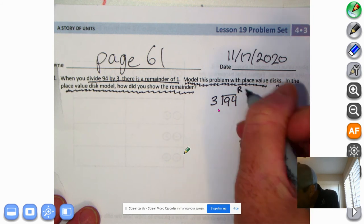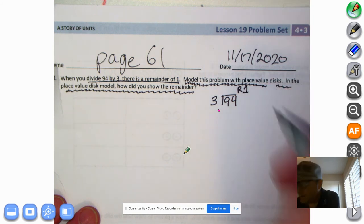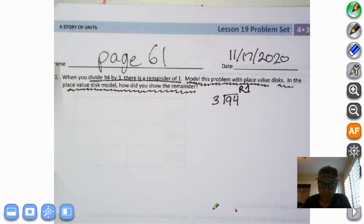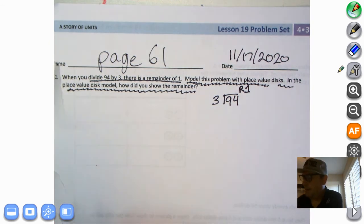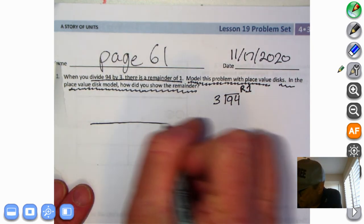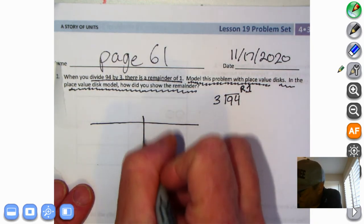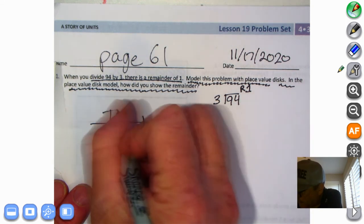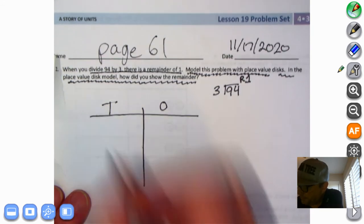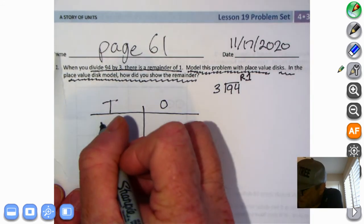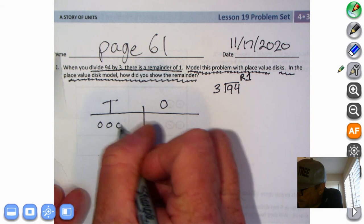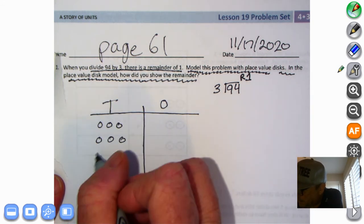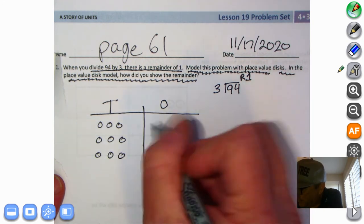Let's get busy with our place value disk. We have our ones and our tens and I'm dividing by 3 so I'm going to put this in groups of 3. So 10, 20, 30, 40, 50, 60, 70, 80, 90 and then we have 4 over here, 1, 2, 3, 4.